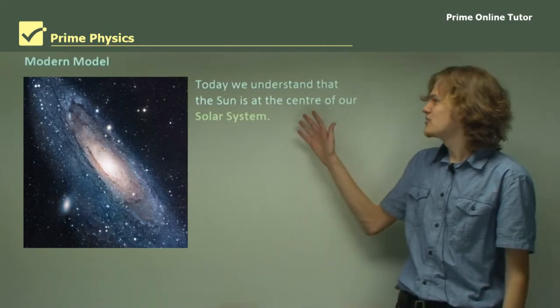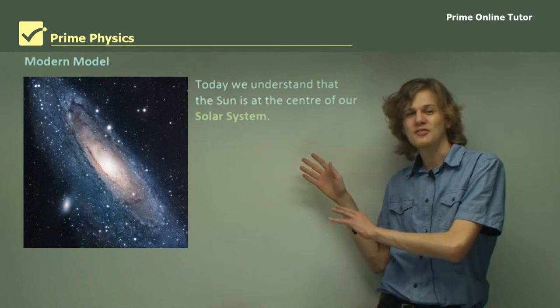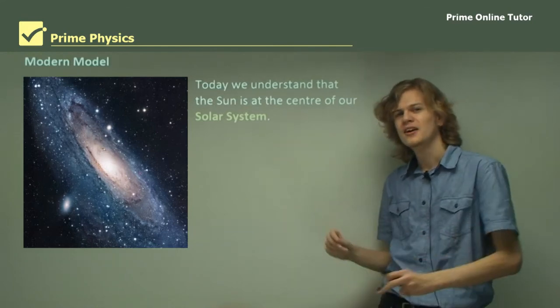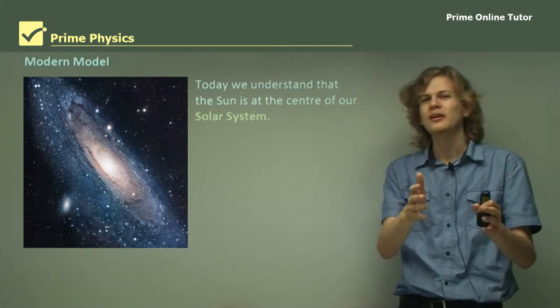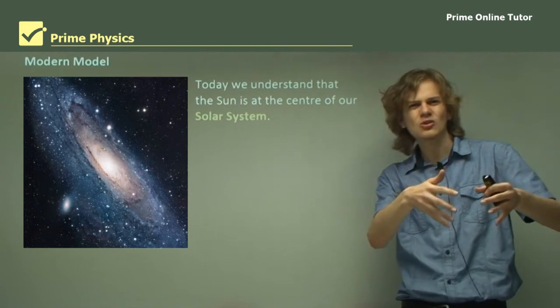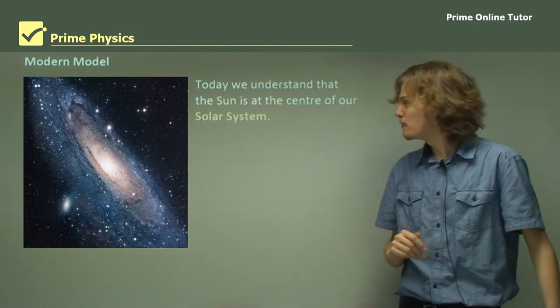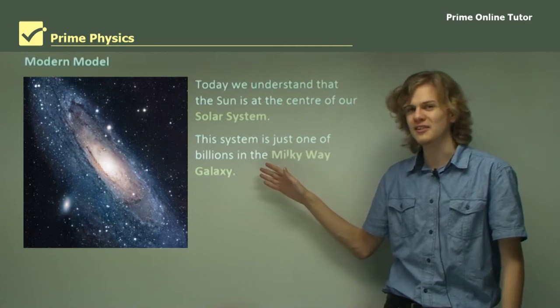Today, we understand that the Sun is at the center of our solar system, and not at the center of the universe. We have a model that's somewhat similar to a heliocentric model, except that although the Earth is orbiting the Sun, the Sun is not anything particularly special in itself. This system is one of billions in the Milky Way galaxy.